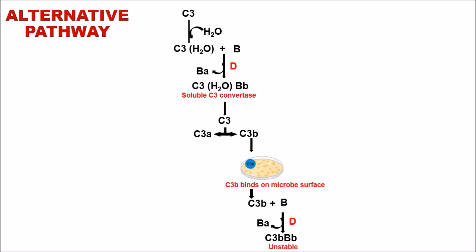This C3bBb is a highly unstable compound which in presence of another protein properdin is stabilized into C3bBb complex, which is an alternative C3 convertase. This is the C3 convertase for alternative pathway.